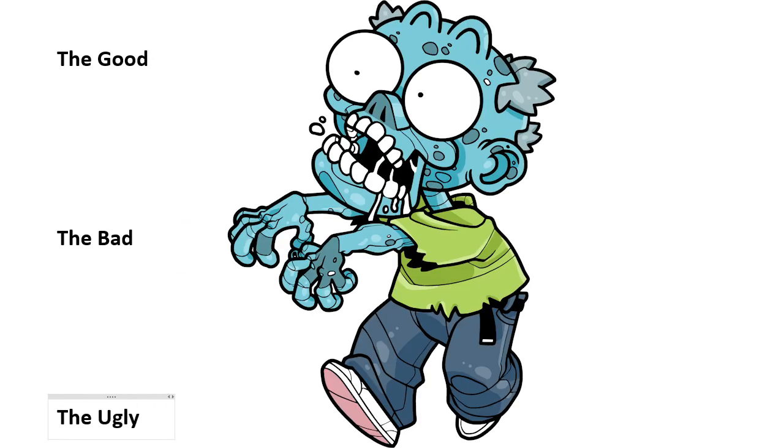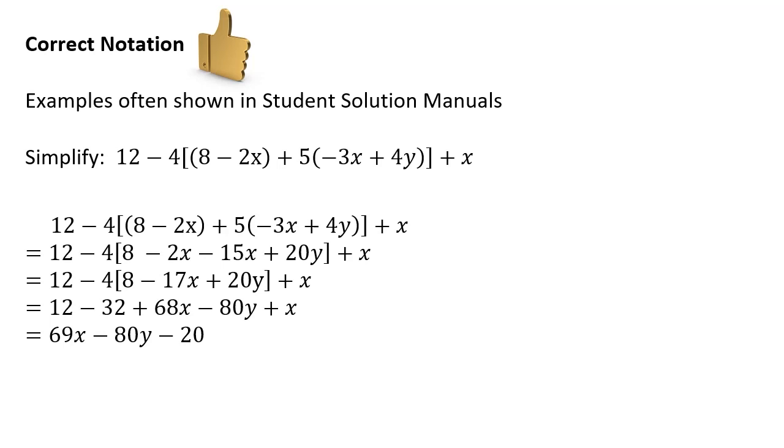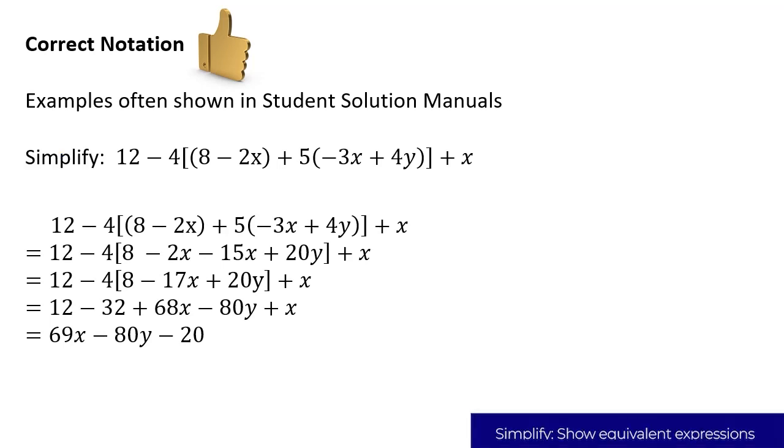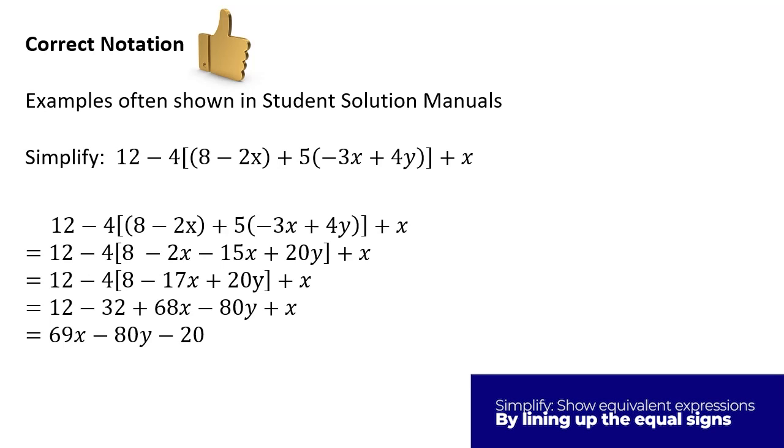Now let's talk about the good, the bad, and the ugly. First, let's talk about the good, or correct notation, and you will often see examples of this in your student solution manuals. If a problem says simplify, you can't solve it. You can't end up with X equals 5. All you can do is rewrite it. So you begin with the original expression, and then you line up equal signs on the left.